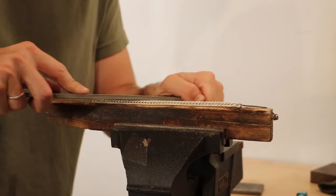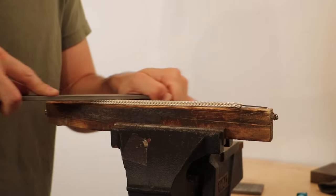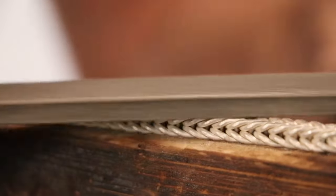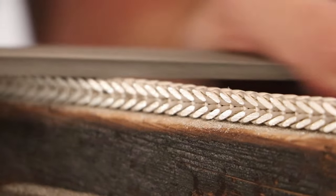Finally, the bracelet undergoes polishing. This last step brings out the silver's natural shine, turning the bracelet from a piece of metal into a work of art. It's ready to be worn, admired, and cherished.